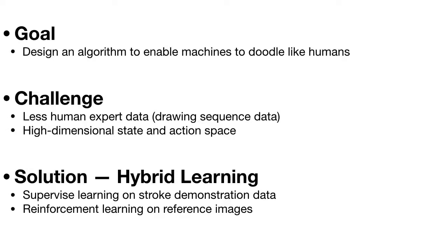In this paper, a hybrid learning mechanism is adopted. Firstly, we pre-train a neural network based on stroke-level demonstration data in a supervised fashion. Secondly, we use deep reinforcement learning to learn doodling trained directly on reference images only.